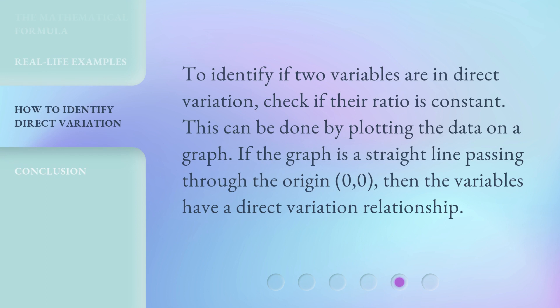To identify if two variables are in direct variation, check if their ratio is constant. This can be done by plotting the data on a graph. If the graph is a straight line passing through the origin (0, 0), then the variables have a direct variation relationship.